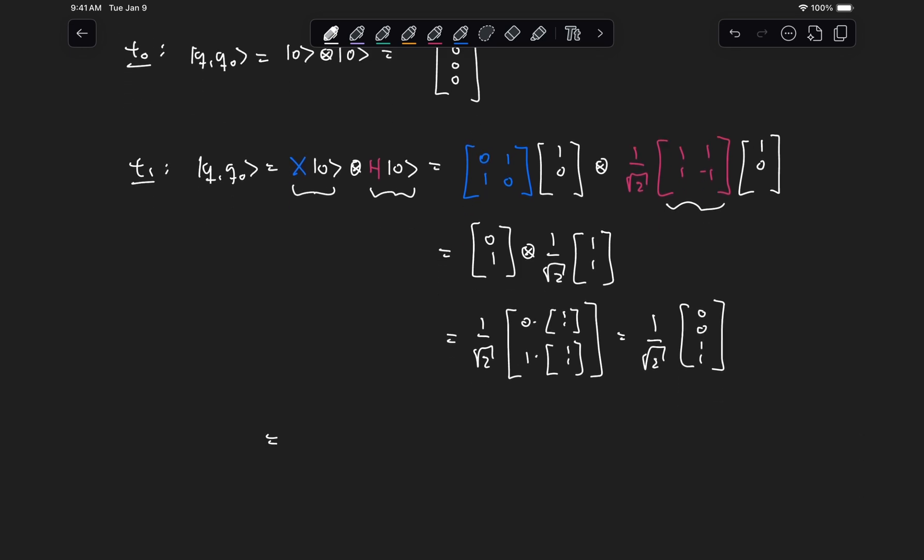Now, similarly, we could have done X tensored with Hadamard gate, and then this whole unitary acting on state 0, 0. And this should give us the exact same result.